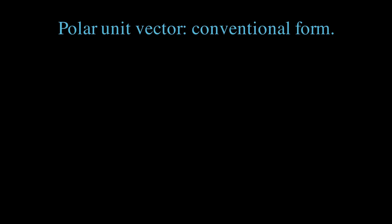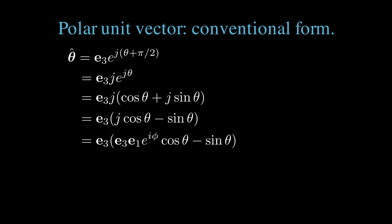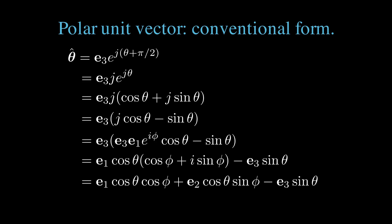Now we'll expand out our polar unit vector theta hat and find the conventional form. We start with e3 times e to the j theta plus pi by 2. We rewrite e to the j pi by 2 as j, and continue expanding the exponential in terms of sines and cosines. We're left with j times cos theta plus j sin theta. Distribute the j's. We have j cos theta minus sin theta. Now write out our explicit form for j, which is e3 e1 times e to the i phi, and expand away. We're left with e1 cos theta all times cos phi plus i sin phi minus e3 sin theta. i is e1 e2. When we distribute the e1, e1 times e1 times e2 leaves us with e2. We're left with e1 cos theta times cos phi plus e2 cos theta times sin phi minus e3 sin theta. This is the conventional form.